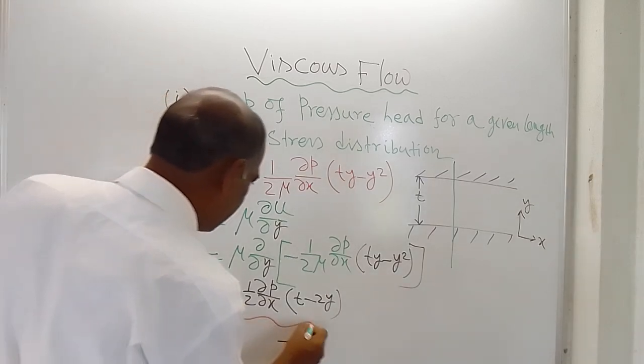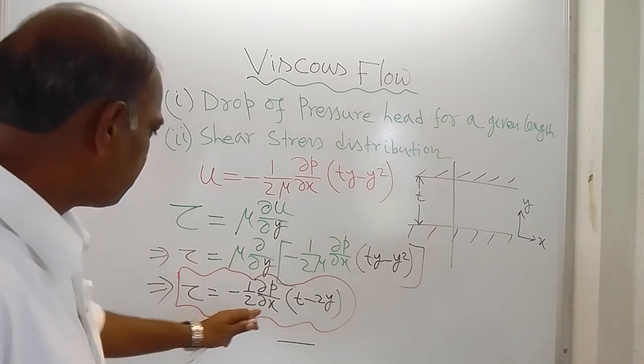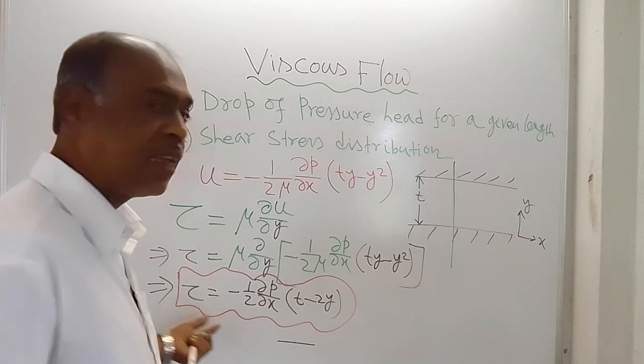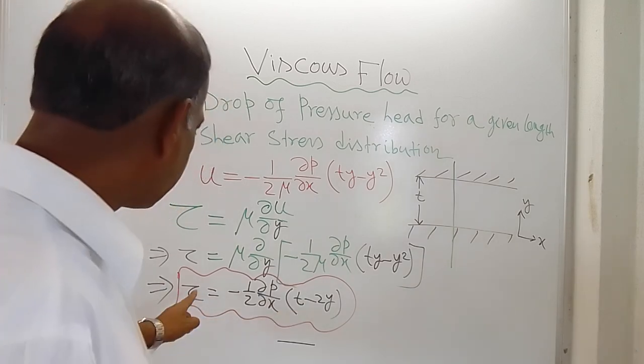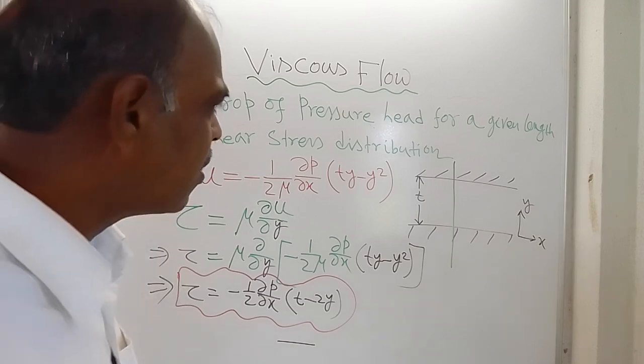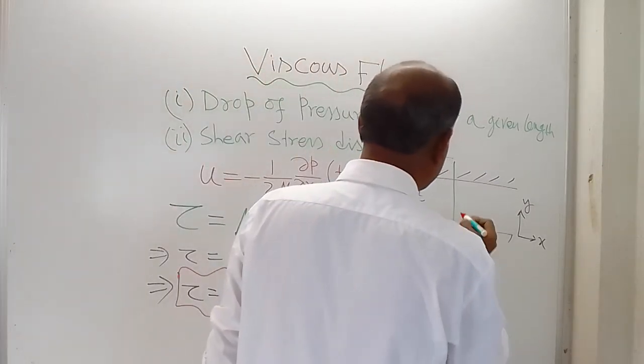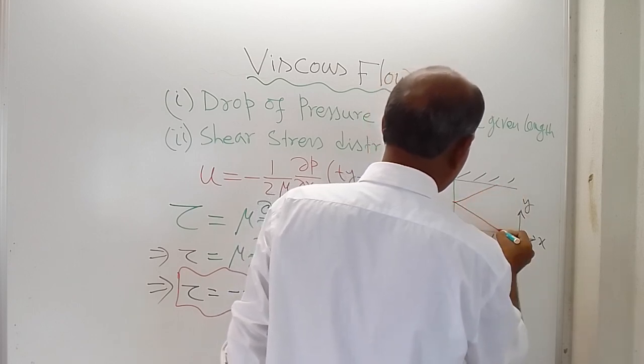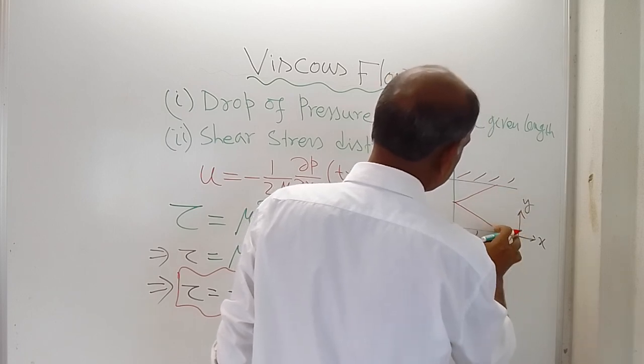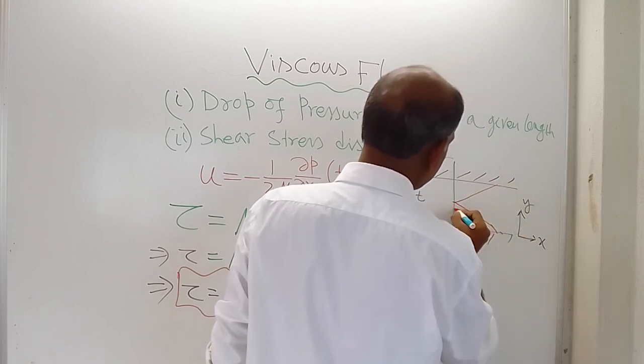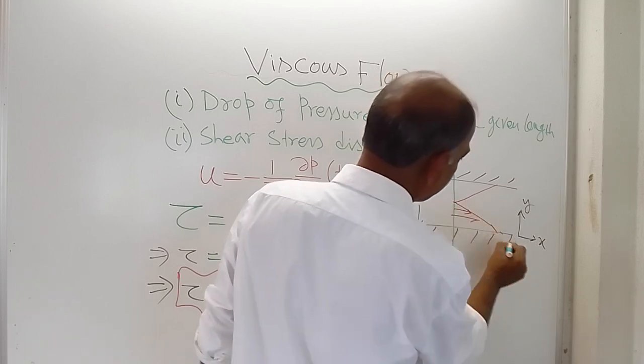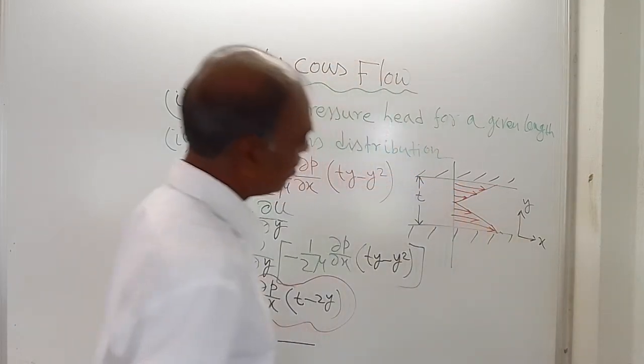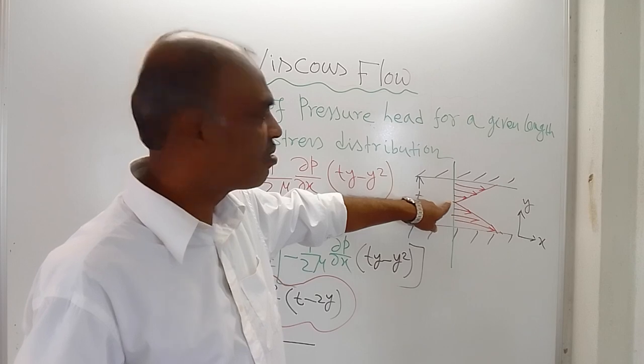This del p del x and t are constants, so you can see that this is an equation of a straight line. Tau varies linearly with y. So if you draw the shear stress distribution, this is the midpoint, so it will be almost like this. These should be at the same height, and this is actually a straight line, not a curved one.